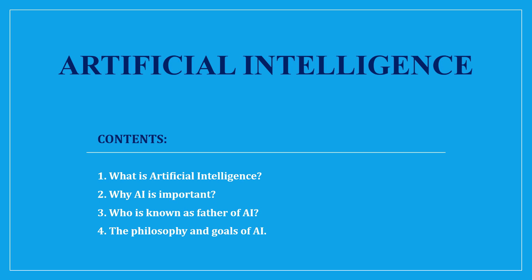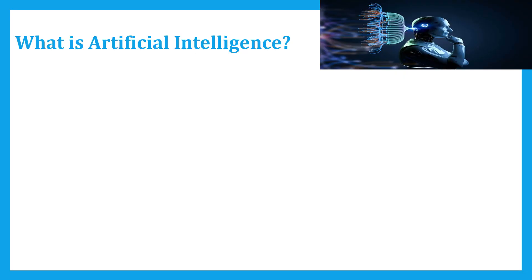So first, what is artificial intelligence? Artificial intelligence is the creation of software that imitates human behaviors and capabilities.